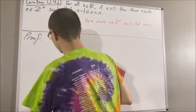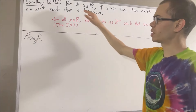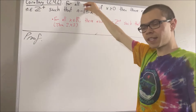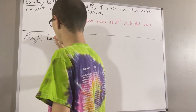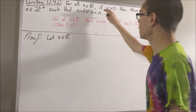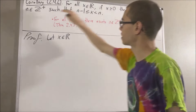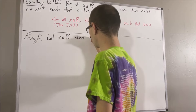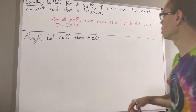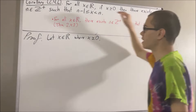Now let's get into proving this corollary. Since we're trying to prove a statement about every real number, give me an arbitrary real number — I'll call it x. From here, we're trying to prove if x is greater than or equal to 0, then there exists a positive integer satisfying the inequality. So let's suppose that x is greater than or equal to 0, and our goal is to show that there is a positive integer that satisfies this inequality.